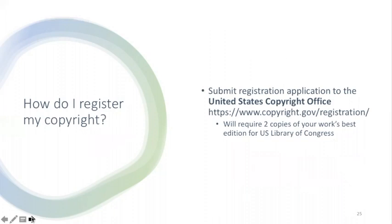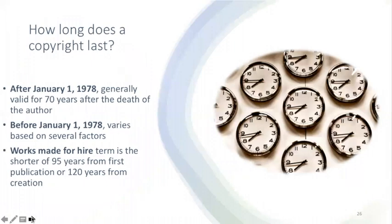Copyright registration is relatively easy to obtain online using the U.S. Copyright Office website at copyright.gov/registration. At the time of filing you'll be required to submit two copies of your work's best edition for deposit in the United States Library of Congress. The best edition is typically the edition you consider final and plan on publicly distributing. Most new copyrights created after January 1, 1978 are protected for the life of the author plus 70 years after the death of the author. Works made for hire are protected for the shorter of 95 years from the date of first publication or 120 years from the creation of the work.